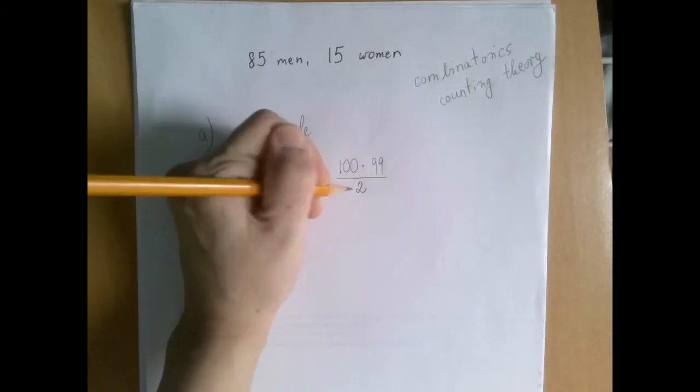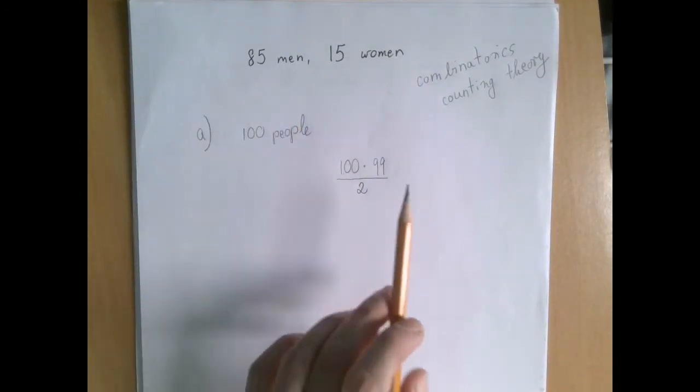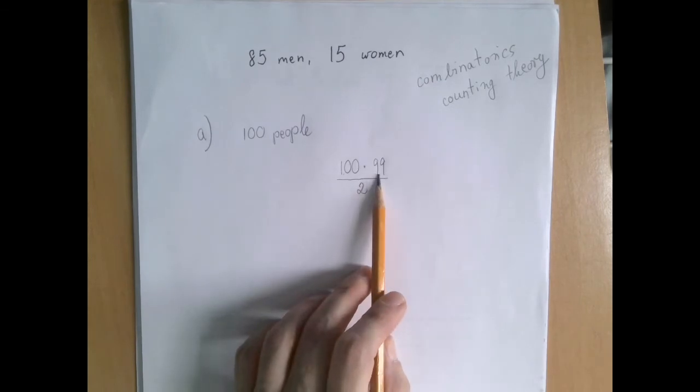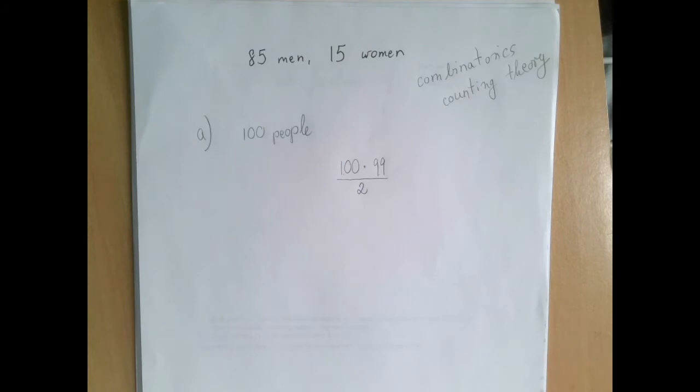So basically, we asked 100 people how many hands they shook. It's 99, because no one shook hands with themselves. And so, we were informed about 100 times 99 handshakes, however, we counted every single handshake twice. Therefore, we divide by two to fix the over count. And that is the answer.